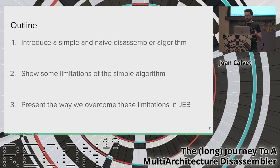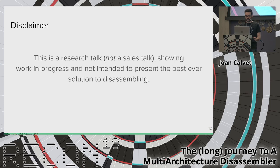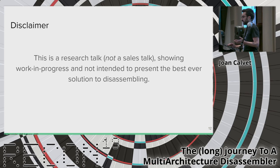The outline of the talk: we will start from a simple and naive disassembler algorithm, show its limitations, and then present how we overcome those limitations in JEB. A small disclaimer: this talk is intended to be a research talk. Many things are debatable and represent the current way JEB's disassembler works — we are not claiming this is the best solution to disassembling.